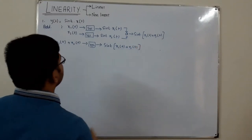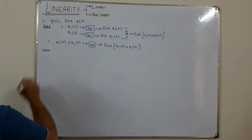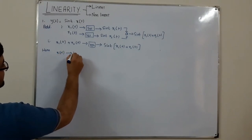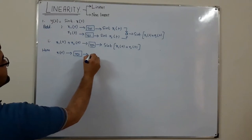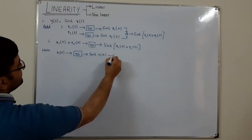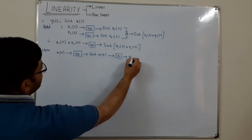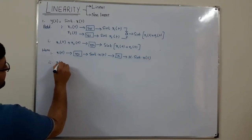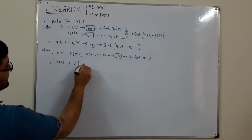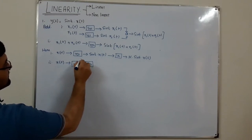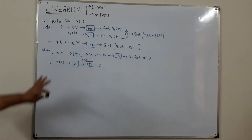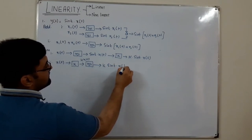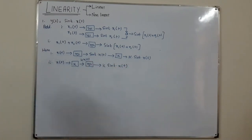Checking homogeneity: the output is sin(t)·x(t). Scale it by factor k to get k·sin(t)·x(t). In step two, scale the input first to get k·x(t), then provide it to the system. The system multiplies sin(t) with the current input k·x(t), giving k·sin(t)·x(t). Homogeneity is satisfied, which means this is a linear system.